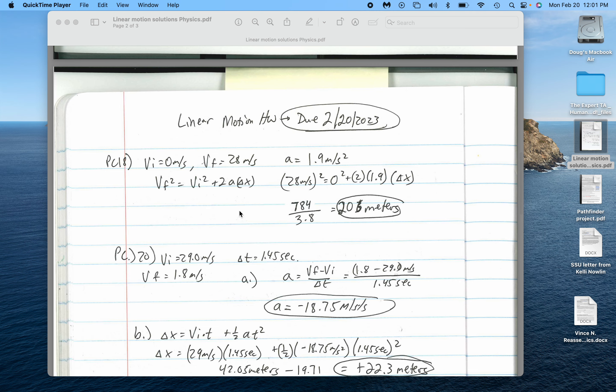For PC-18, it says a Cessna has a takeoff speed of 28 meters per second. Obviously it would start at zero meters per second. You're asked to find the length of the runway that it would need.